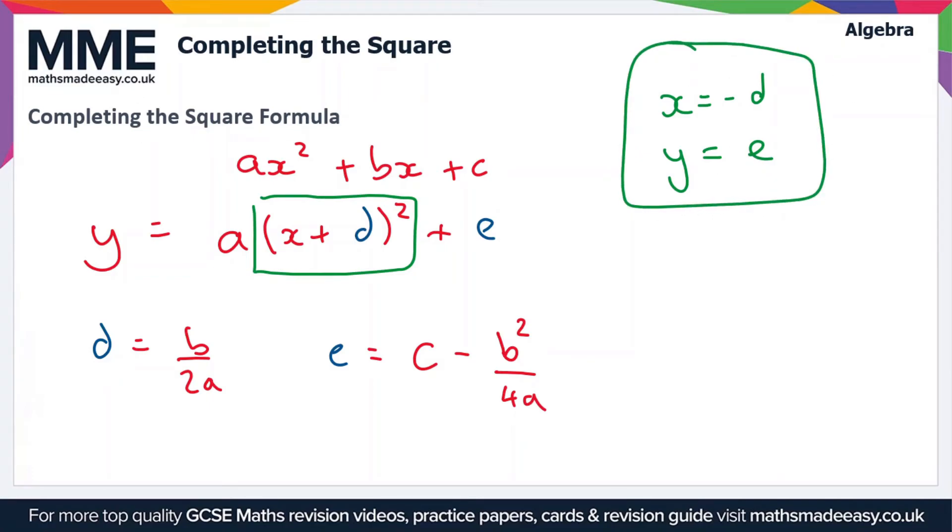So why is this the case? Well, if (x + d)² can take a minimum value of 0, then the minimum value of y is going to be when this is equal to 0 because we're adding e onto the end. Now I should point out that this is going to be a maximum point in the curve when a is negative and a minimum point in the curve when a is positive.